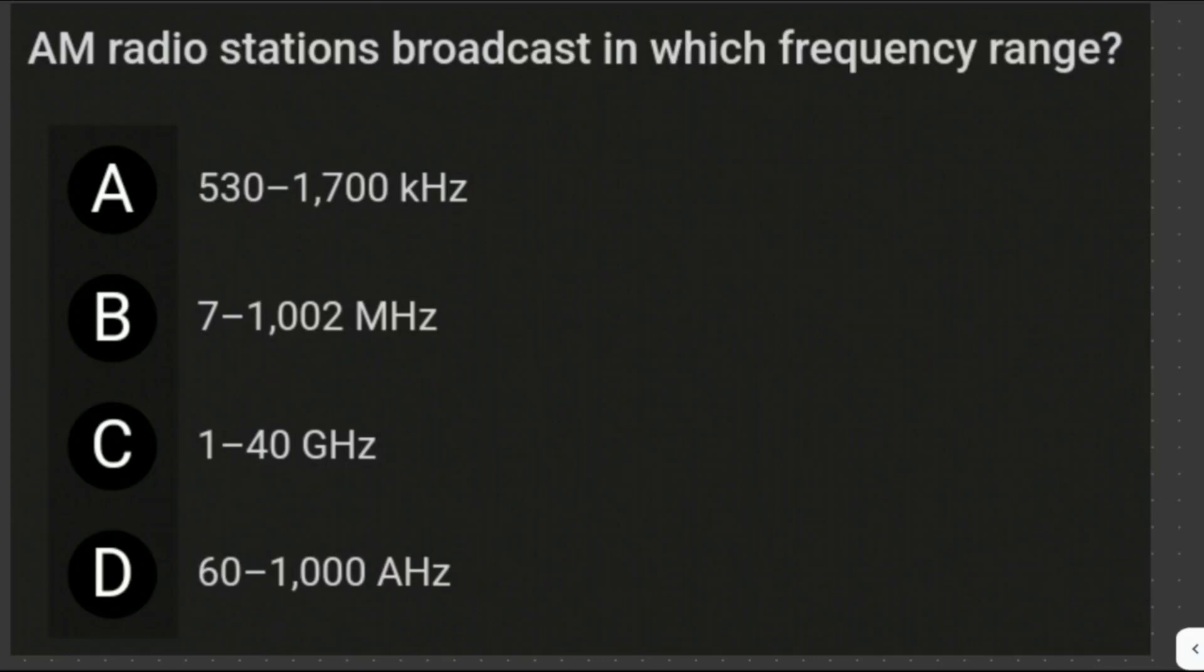AM radio stations broadcast in which frequency range? Frequencies are measured in kilohertz, megahertz, or gigahertz. In this case, we're asked for the frequency of the amplitude modulation radio station. AM radio stations broadcast in the range 530 to 1700 kilohertz. Our answer is letter A.